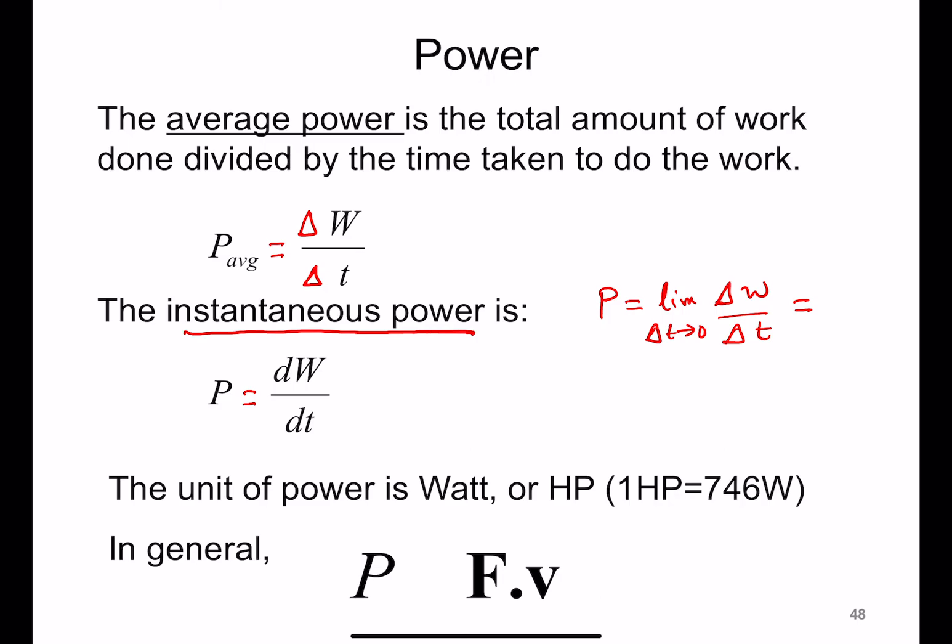What is the unit of power? Power is energy or work divided by time. Work is measured in joules, time is measured in seconds. So the unit of power is joules divided by seconds, and that is defined as a watt. One watt is one joule divided by one second. So the SI unit of power is a watt.